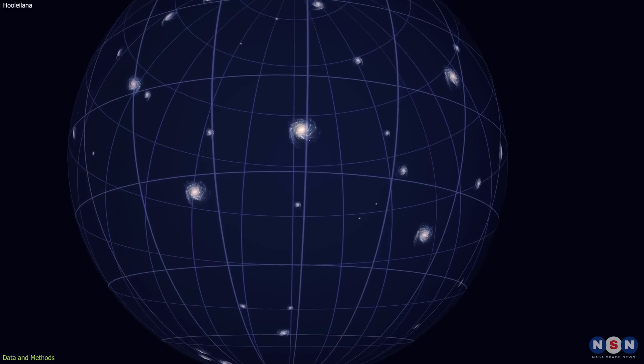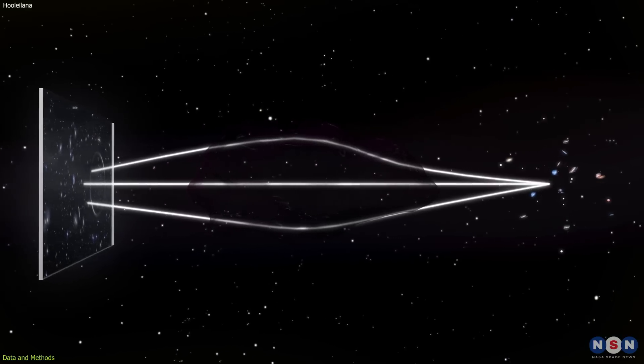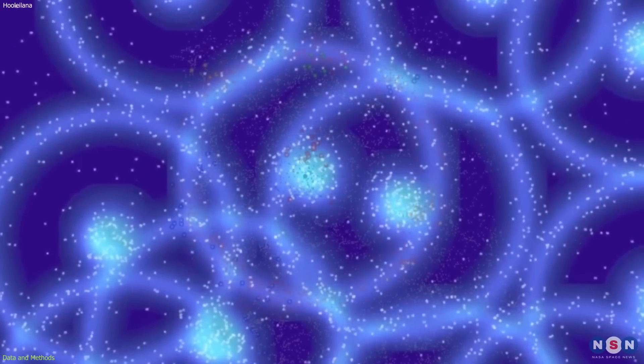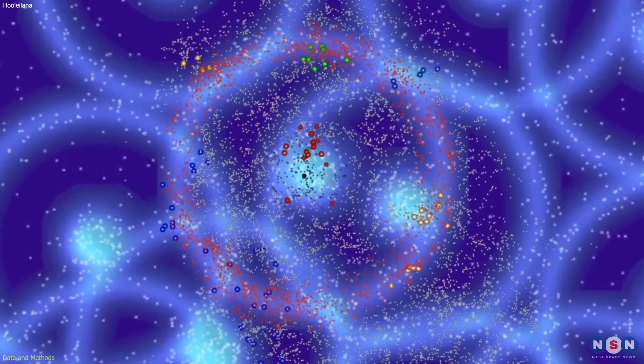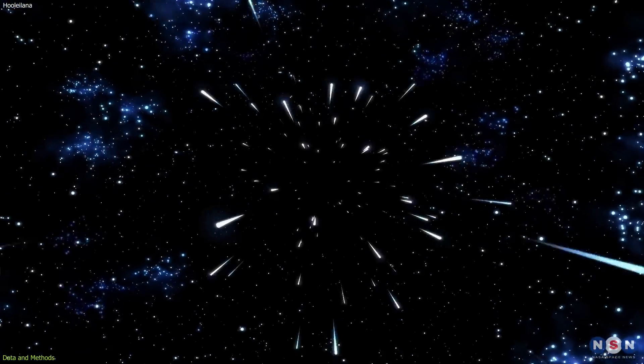How fast they are moving away from us due to the expansion of the universe, and how their light is affected by gravity. By using these methods, astronomers were able to map out the 3D distribution of galaxies in our cosmic neighborhood, up to a distance of about 1 billion light-years from Earth.